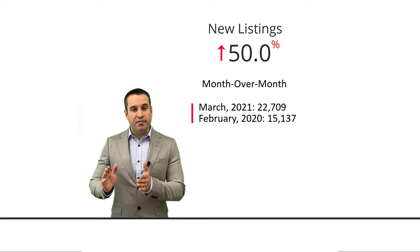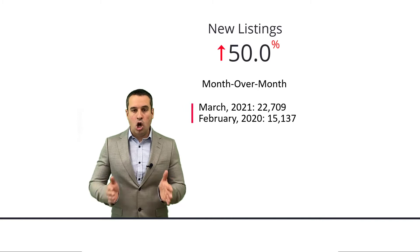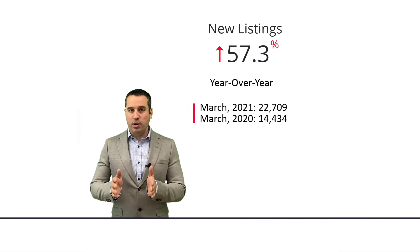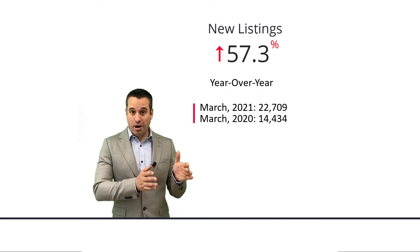Now new listings up 50% month over month, great. Only up 57.3% year over year. So you have sales are up 100%, listings are up only 57.3%. It stands to reason that prices are going to skyrocket, which of course they did.